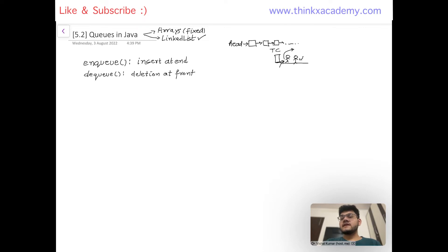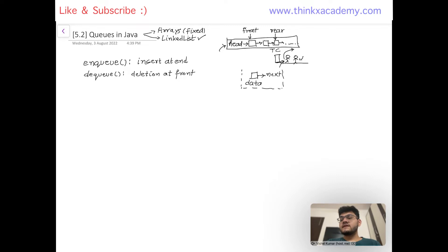If we want to perform insertion and deletion at different ends, we need to maintain two pointers — one will be the front pointer pointing to the first element, and the second will be pointing at the last node of the linked list. In this data structure, we have a fundamental unit called a node. This node has two things: the data and the next pointer. We will then create a class Queue, and keep creating objects of this fundamental node class.